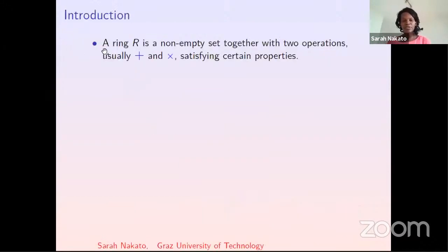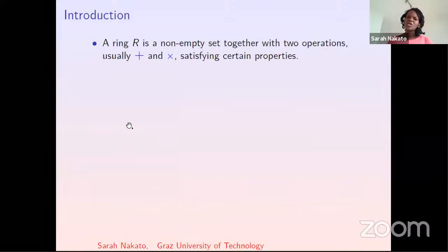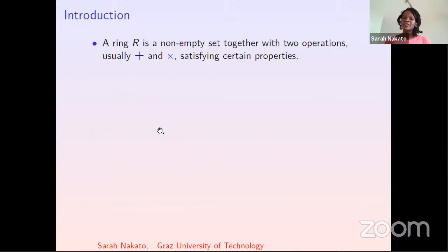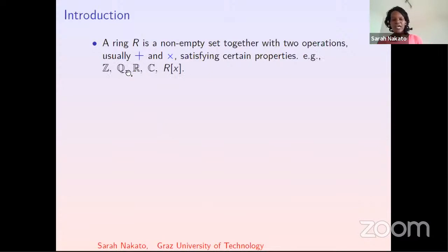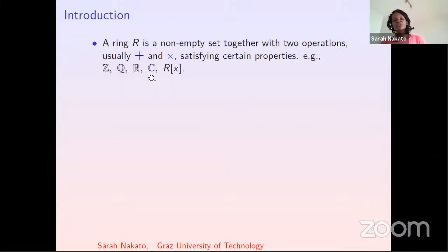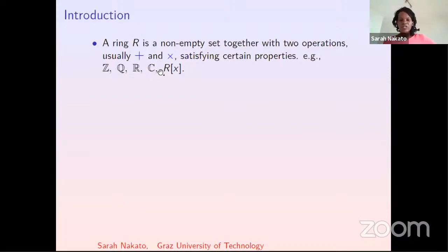So we have a brief introduction. By a ring we mean a non-empty set together with operations, usual addition and multiplication, satisfying certain properties. For instance, our usual numbers are rings — the integers, the rationals, the reals, the complex numbers with addition and multiplication. These are rings. But also polynomials with coefficients from a ring also form a ring.